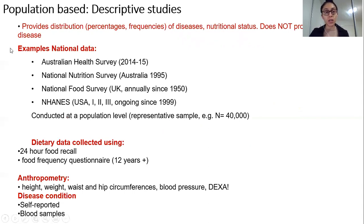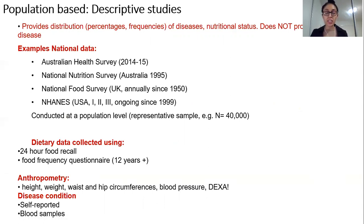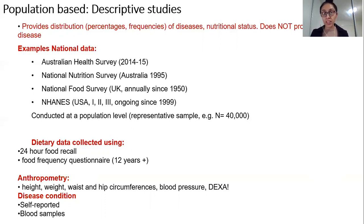The first type is called a population-based descriptive study. When you look at any national data set — from the World Health Organization, United Nations, or Australian Bureau of Statistics — these are descriptive studies. They describe a population's characteristics: the number of males or females in Australia, infant mortality rate, abortion rate, maternal mortality ratio, or the proportion of people earning above or below the median income.